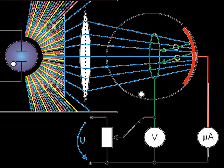The saturation current increases with the increase of the light intensity. It also increases with greater frequencies due to a greater probability of electron emission when collisions happen with higher energy photons. If we apply a negative potential to the collector plate Q with respect to the plate P and gradually increase it, the photoelectric current decreases, becoming zero at a certain negative potential. The negative potential on the collector at which the photoelectric current becomes zero is called the stopping potential or cutoff potential.